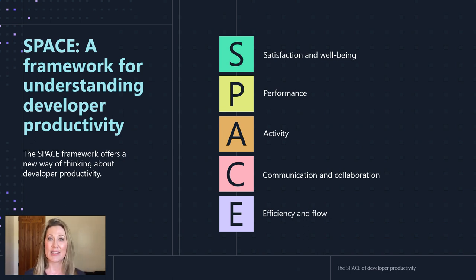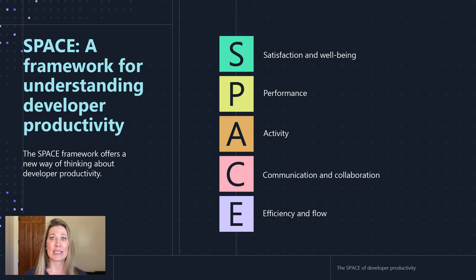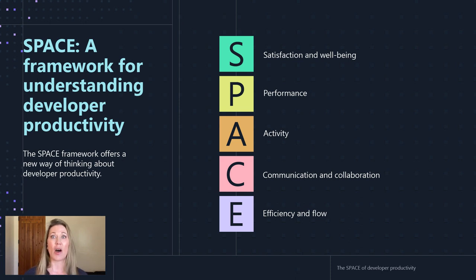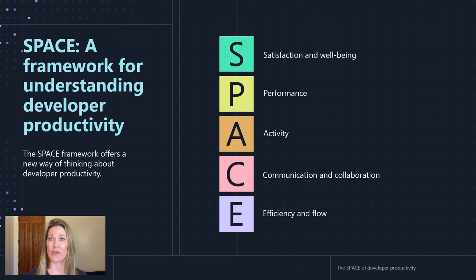SPACE: S is satisfaction and well-being, P is performance, A is activity, C is communication and collaboration, and E is efficiency and flow. By thinking about all five dimensions of productivity, it helps us have a more holistic understanding of what it means to make software. We'll go into all of these in a bit.